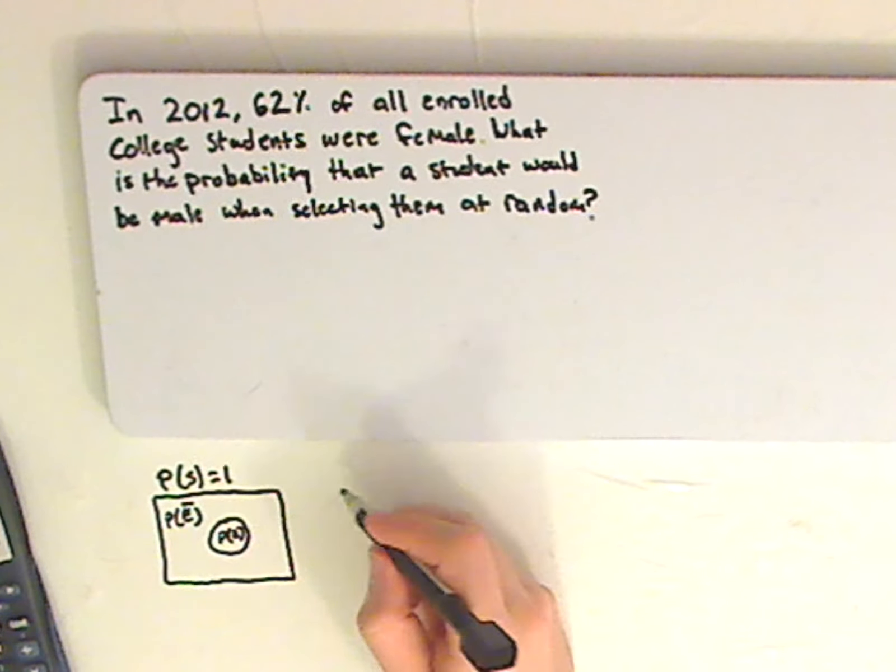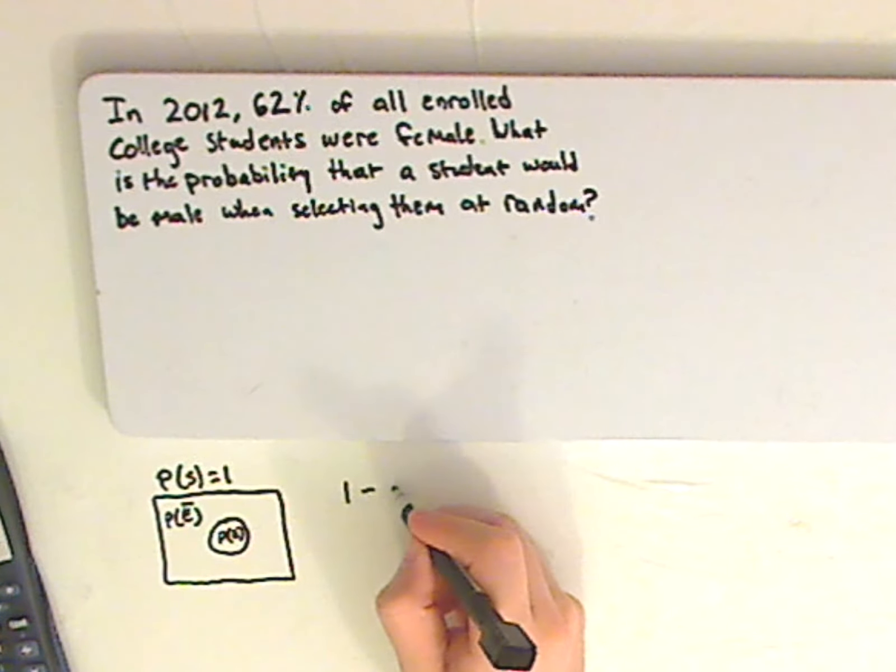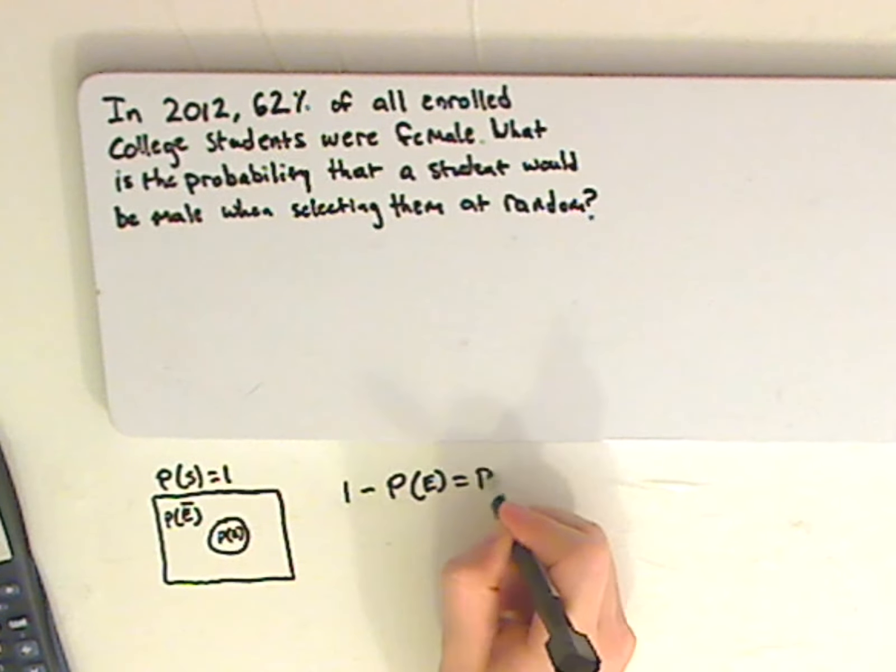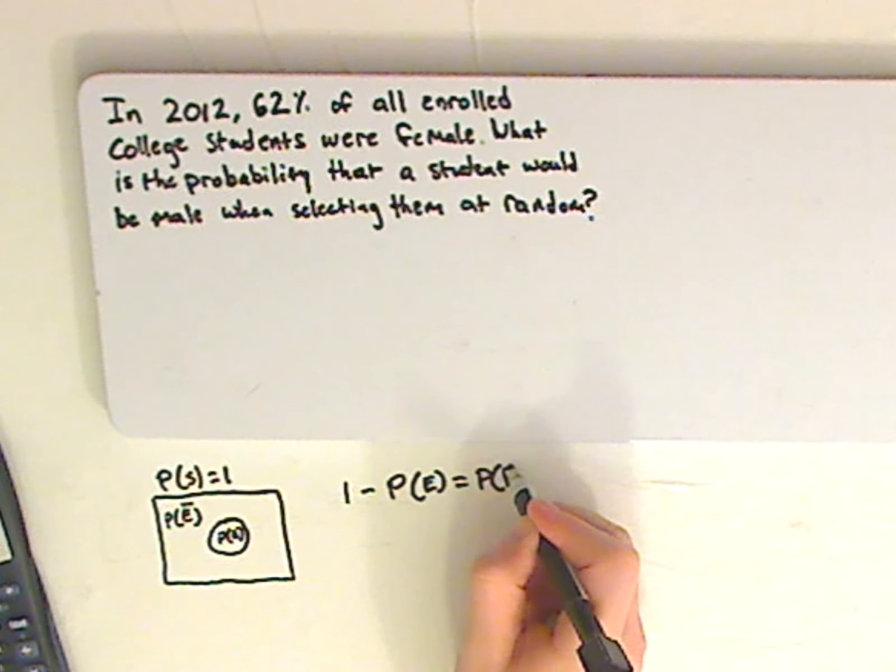So here, it would be 1 minus the probability of the event equals the complementary probability.